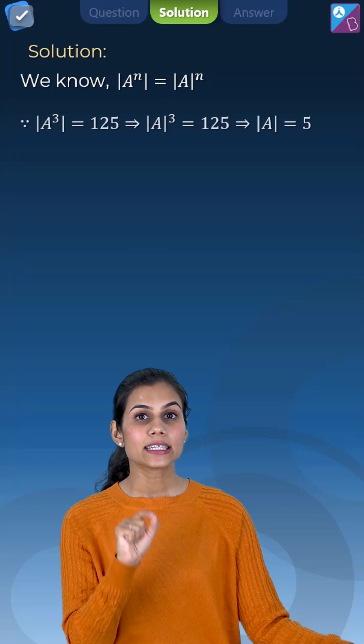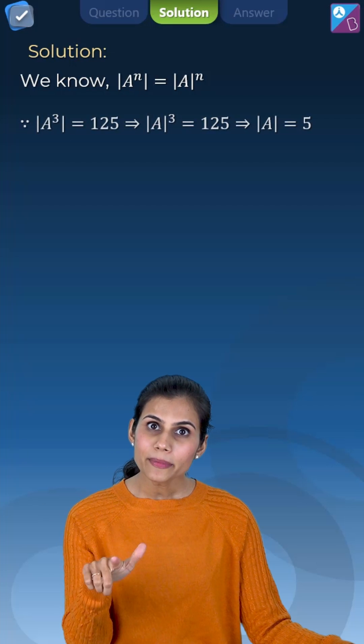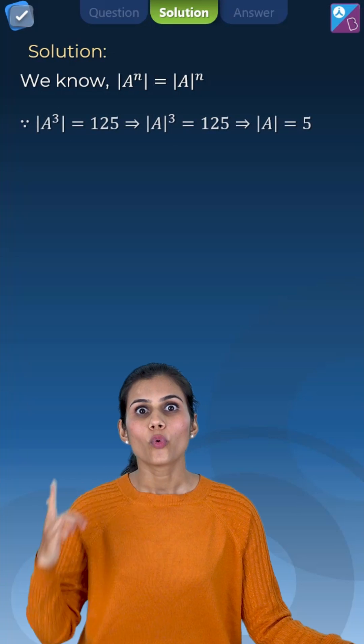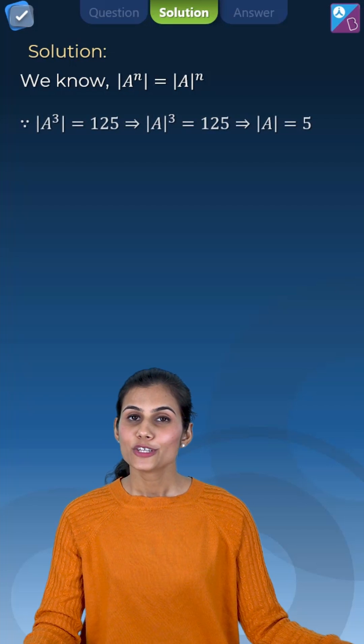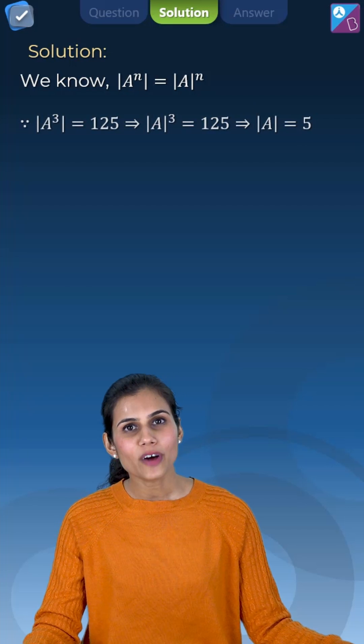This implies that determinant of A cube will be equal to determinant of A whole cube which is further given to us as 125, that is 5 cube. So what do you get? Determinant of A is equal to 5.